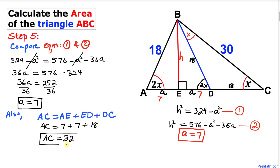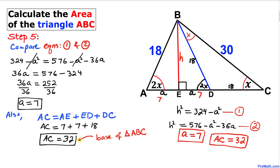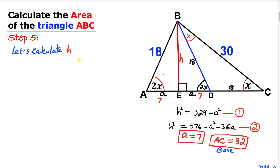Putting everything together: AC = 7 + 7 + 18 = 32. This AC is simply the base of triangle ABC. Now let's calculate the height H.